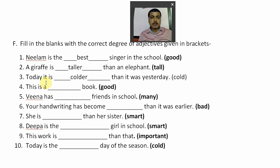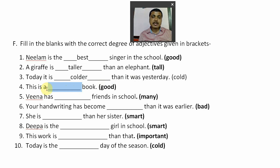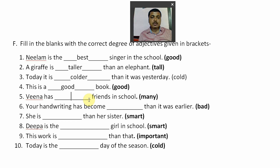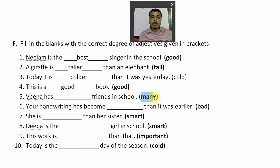Question five: 'Veena has ___ friends in school.' Here also, neither 'than' nor 'the' is present around the blank, so you use the positive form of 'many.' Positive form of 'many' remains as 'many.' Question six: 'Your handwriting has become ___ than it was earlier.' After the blank you have 'than,' so you write the comparative form of 'bad.' Don't think it's 'badder' or 'badest' — bad, worse, worst. Comparative form of 'bad' is 'worse' — W-O-R-S-E.